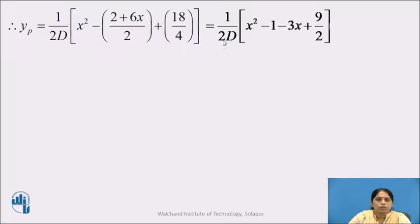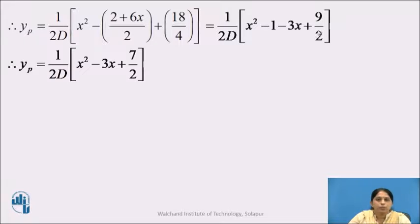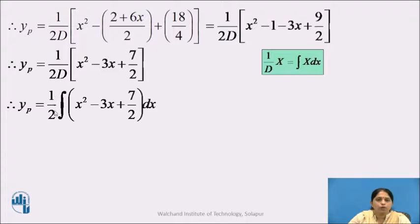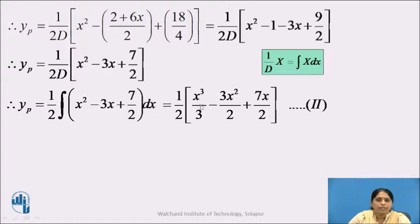This simplifies to 1/(2D) · [x² - 3x + (-2 + 9/2)], where -2 + 9/2 = -1 + 9/2 = 7/2. So yp = 1/(2D) · (x² - 3x + 7/2). Since 1/D of a function means integration, yp = (1/2) ∫(x² - 3x + 7/2) dx = (1/2)[x³/3 - 3x²/2 + 7x/2]. We call this equation 2.